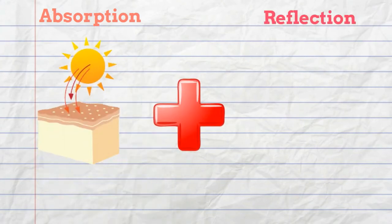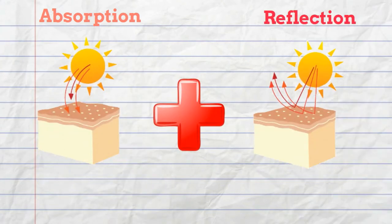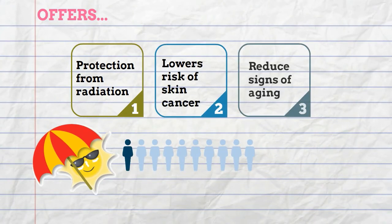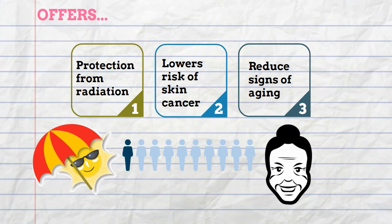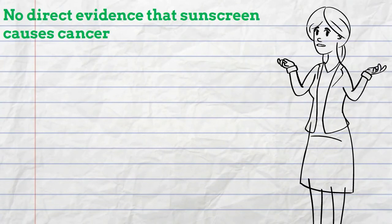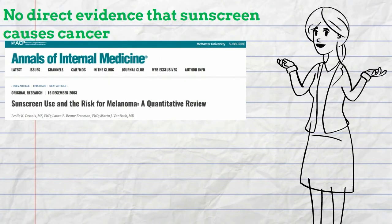This combination of absorption and reflection can offer efficient protection from harmful radiation, decrease the risk of getting skin cancer, and can even reduce signs of aging on the skin. Sunscreen sounds pretty great, but is there any evidence suggesting that it can cause cancer? Currently, there is no direct evidence of sunscreen causing cancer.